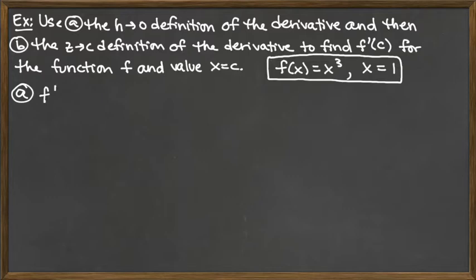F prime is the derivative function, and we're going to be evaluating that at the given x value. So f prime of 1 is what we're looking for, and for this first part A, we're going to be utilizing the limit as h goes to 0 definition.